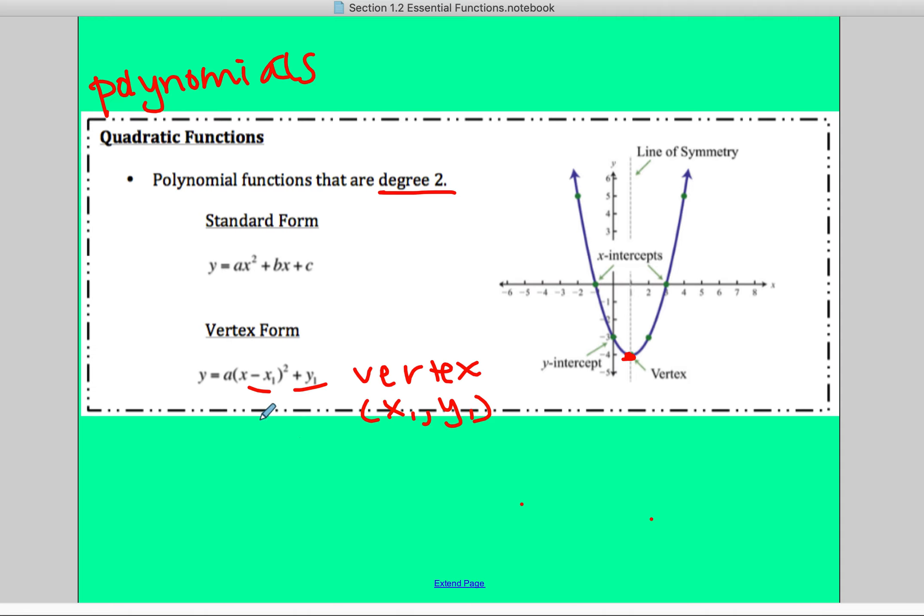That's kind of the nice thing about vertex form is you know your vertex just by looking at it. There is one other form that would be good to know, is you got your factored form.